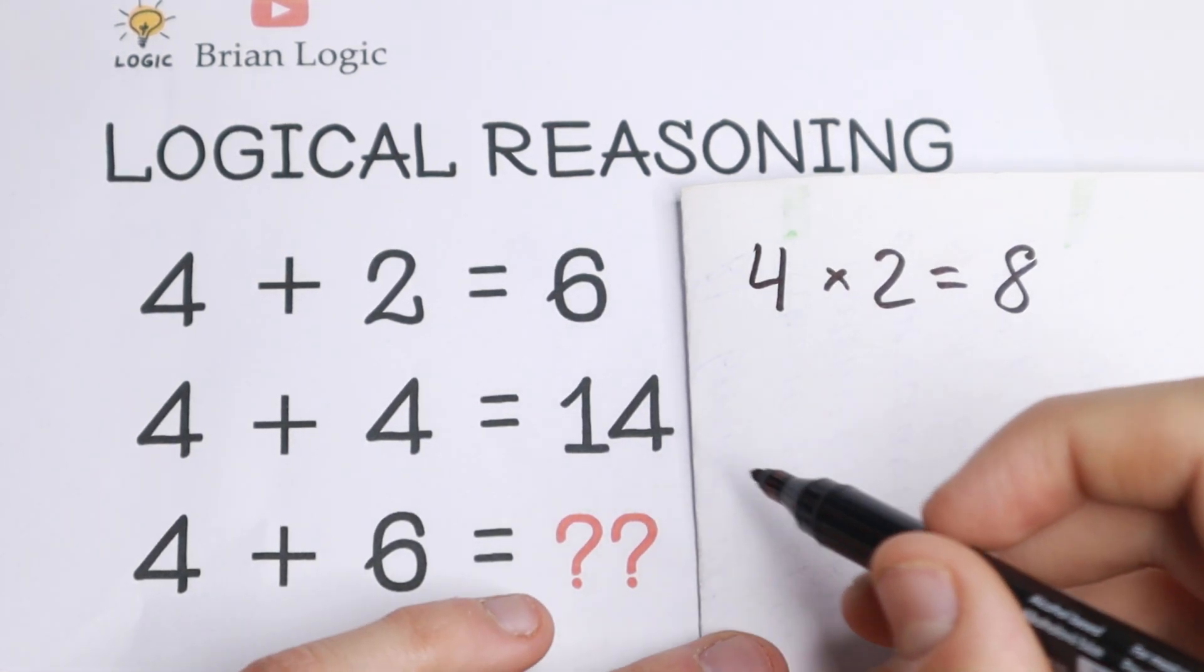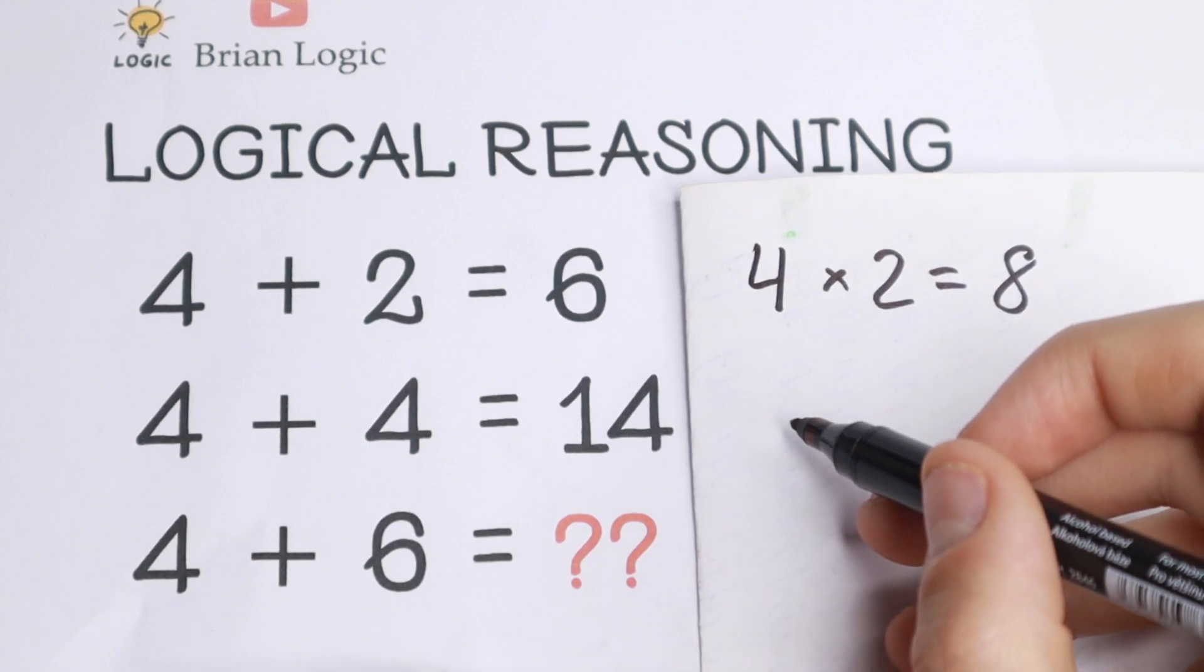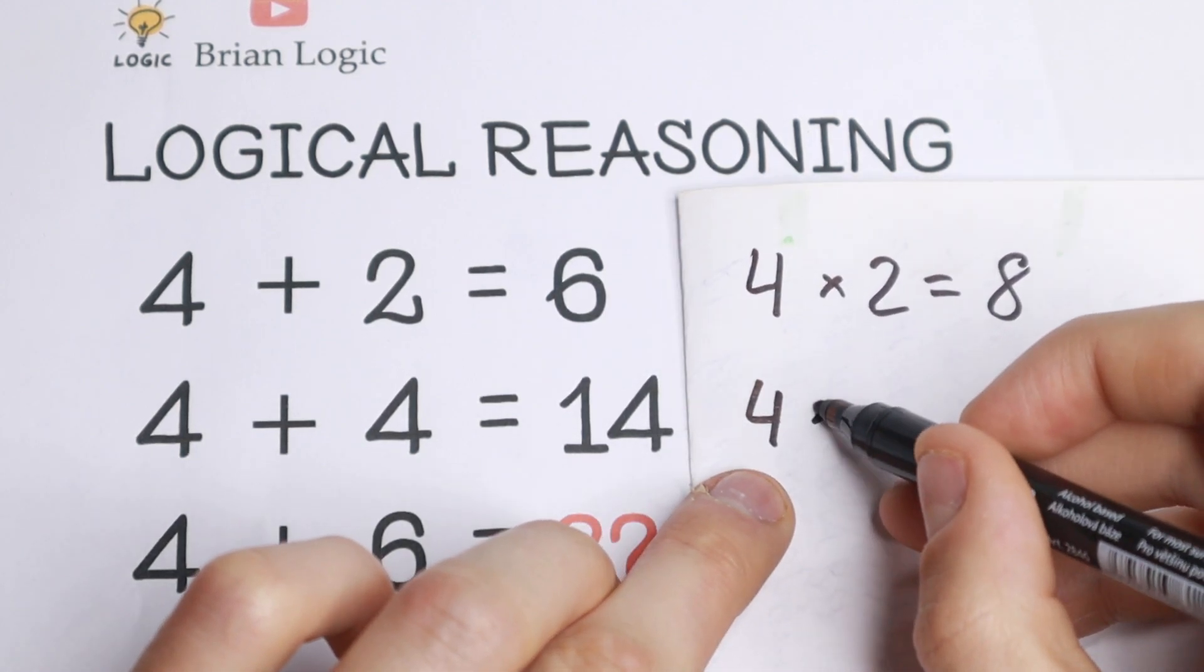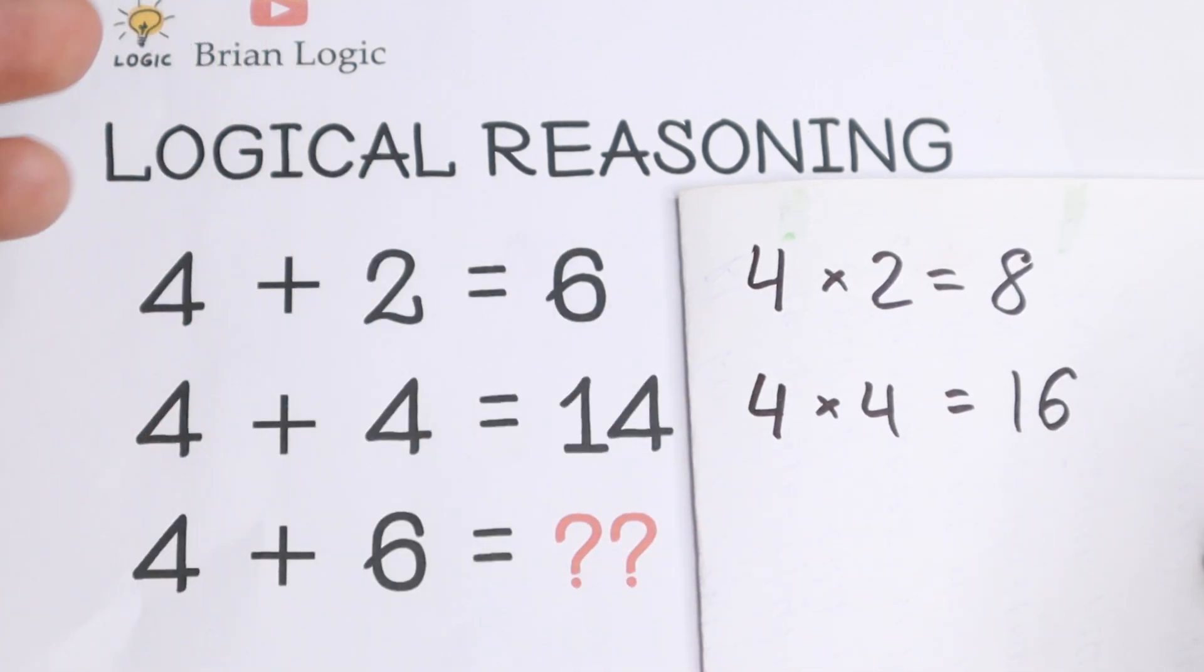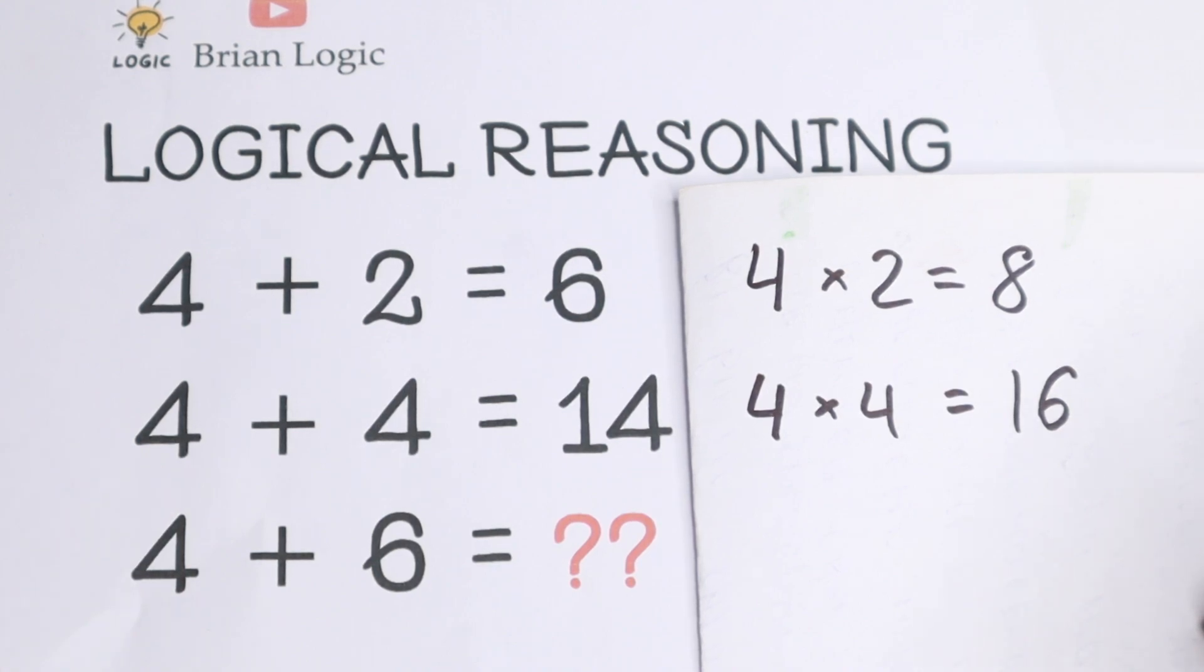And take a look, the second row, let's use the same logic. So 4 times 4, we will have 16. So as you can see, this and this is not the same. But take a look closely. What is the difference between these numbers?